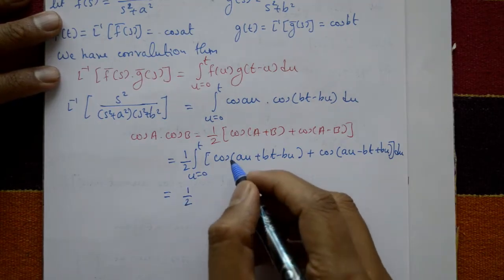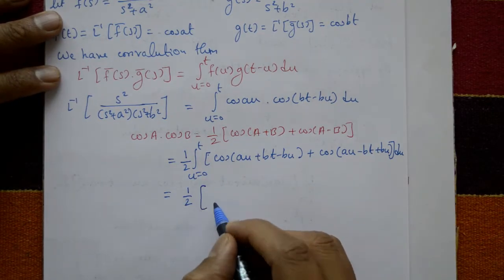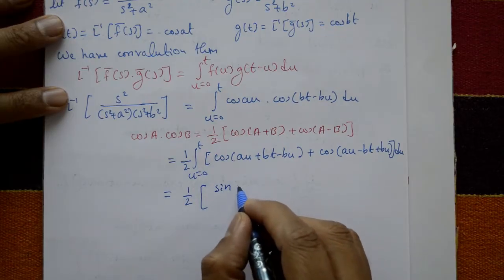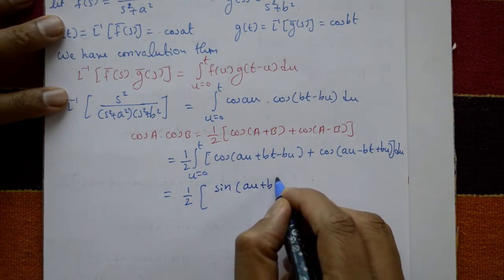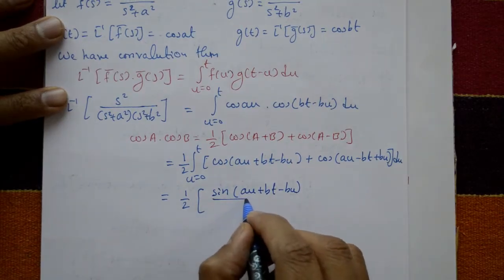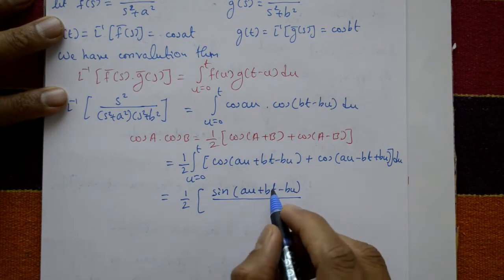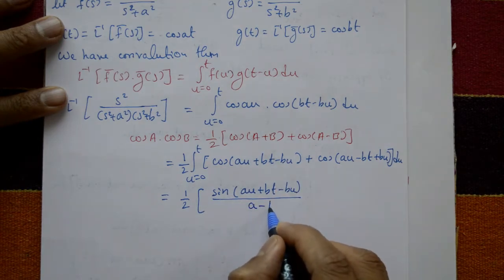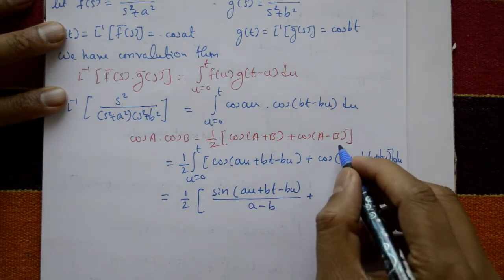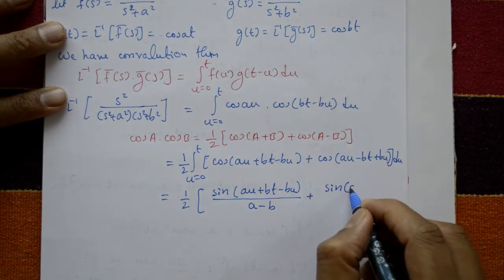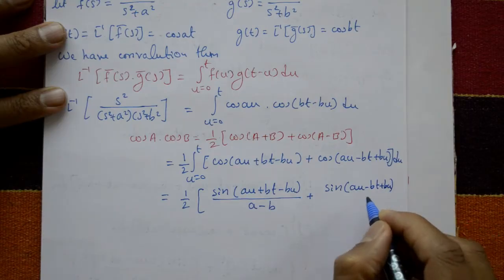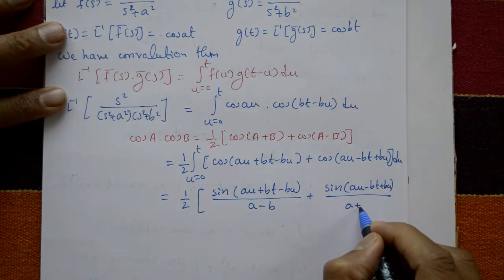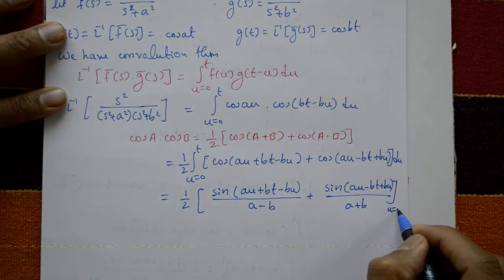Now integrating, the integral of cos is sin. We get ½ times [sin(au − bt + bu)/(a−b) + sin(au + bt − bu)/(a+b)], evaluated with limits u=0 to t.